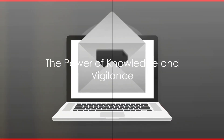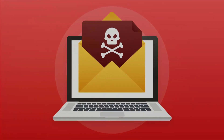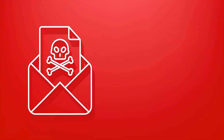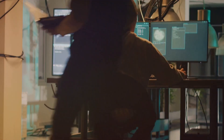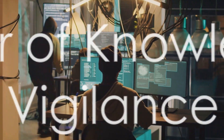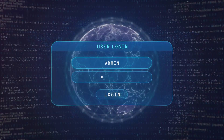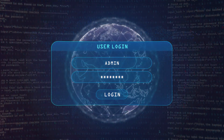Now that we understand the problem, how can we protect ourselves and our businesses from these cunning cyber manipulations? The first line of defense is knowledge. Understand that social engineering exists and is a frequent tactic used by cybercriminals. Get familiar with common social engineering methods such as phishing, pretexting, and baiting, and educate yourself and your employees about these tactics. Knowledge is power, and in this case it is a shield against cyber manipulation.